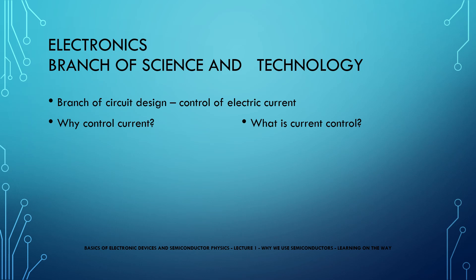One can understand that the control of electric current can mean the control of direction of the current, the control of the amount of the current, whether it is amplified, attenuated or constant, or the control of the start and end time of the current flow.